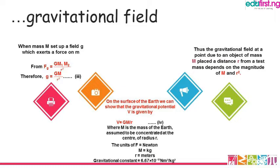Also take note: the gravitational field at a point due to an object of mass M placed at a distance R from a test mass depends on the magnitude of M and R squared. On the surface of the earth, the gravitational potential denoted by V is given as GM over R, where M is the mass of the earth assumed to be concentrated at the center of radius R.